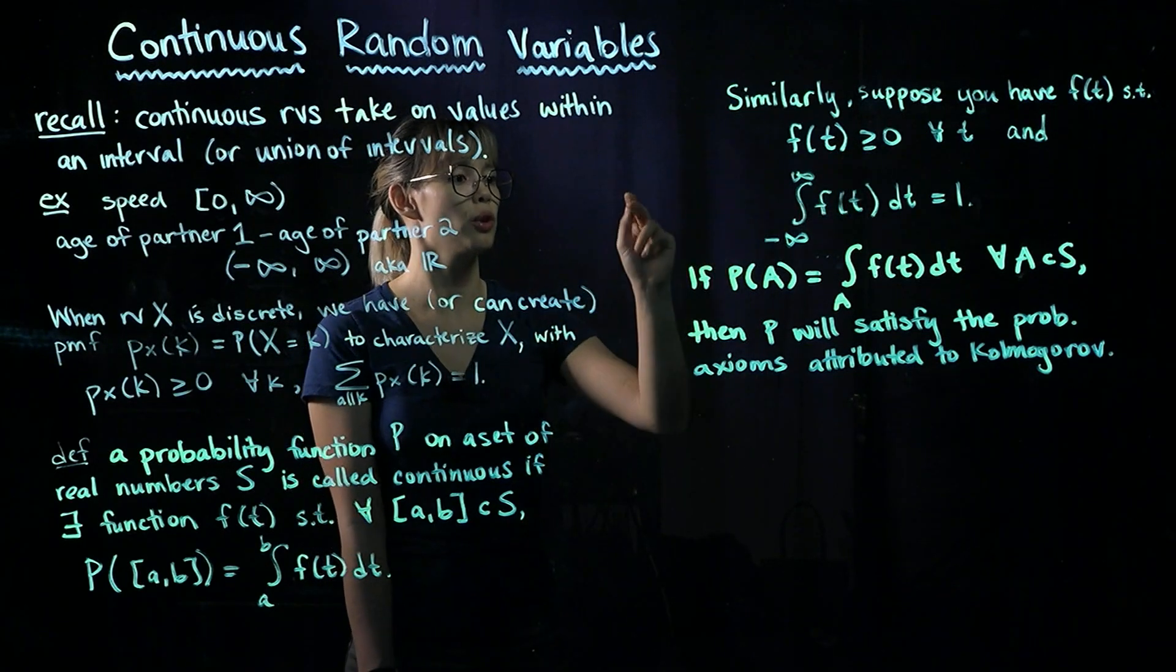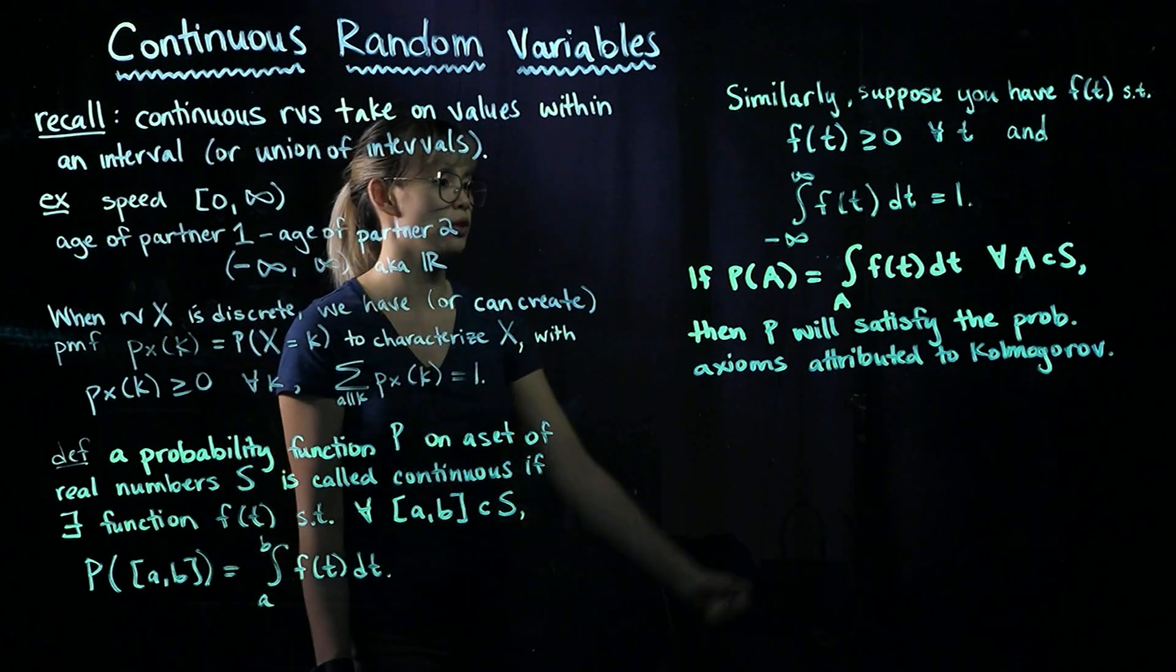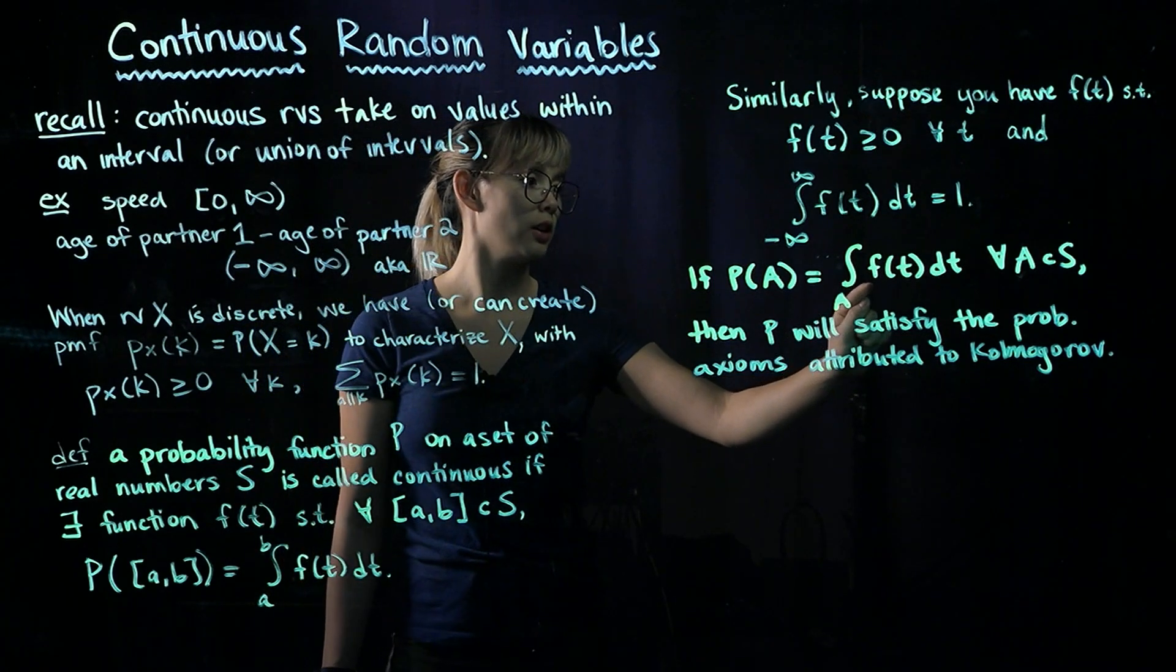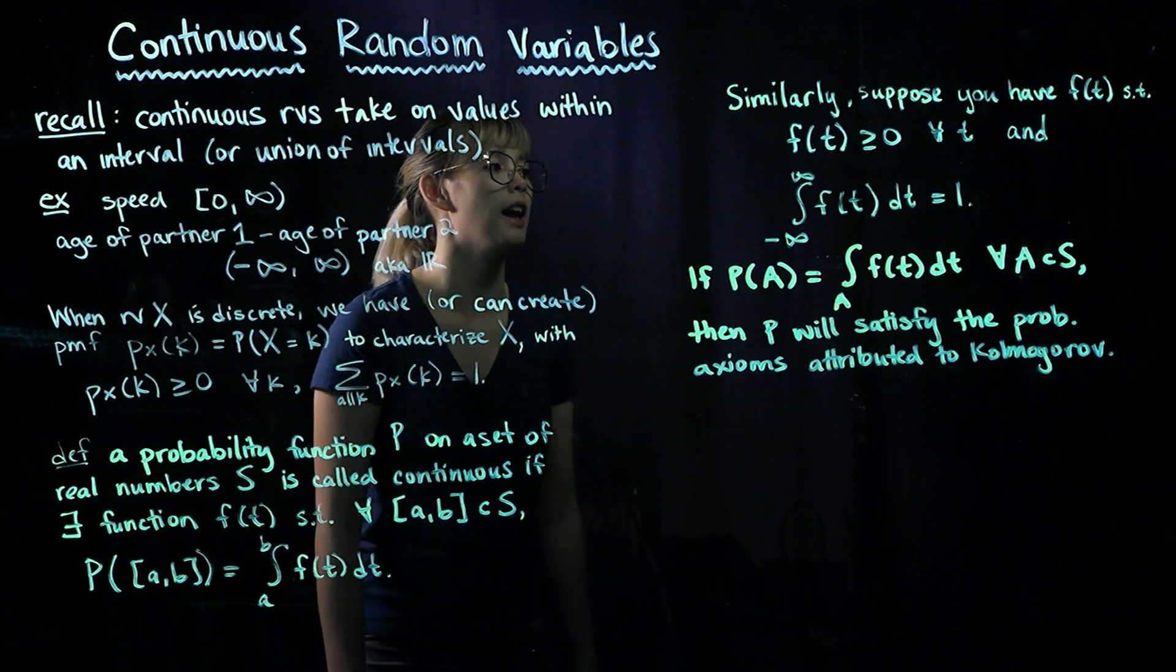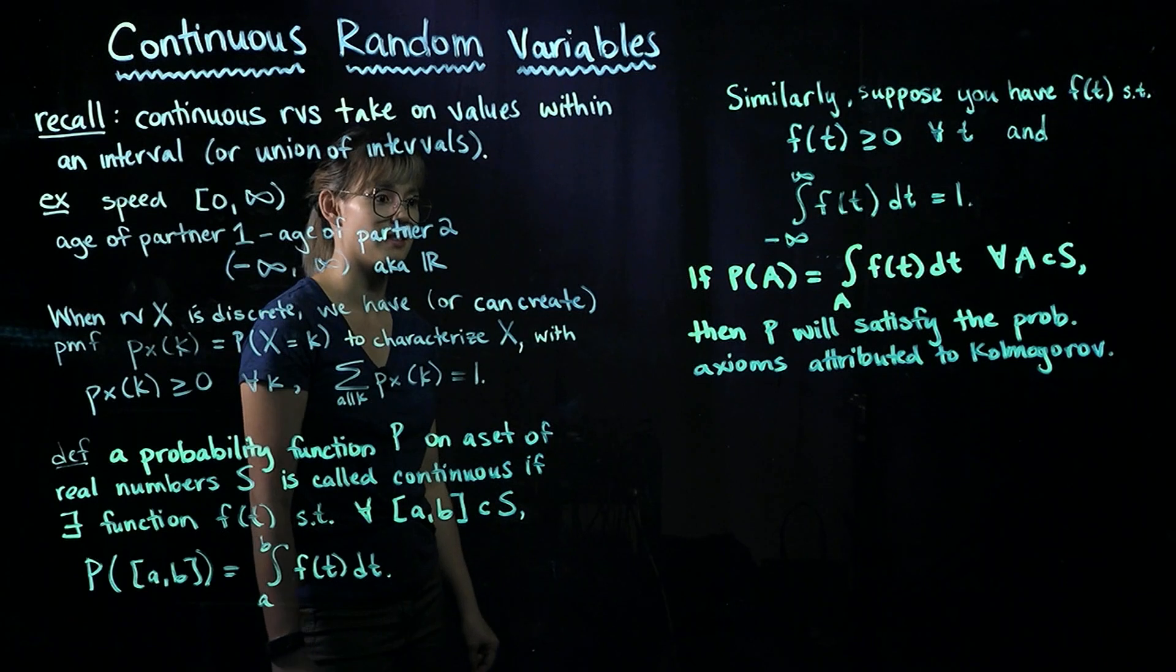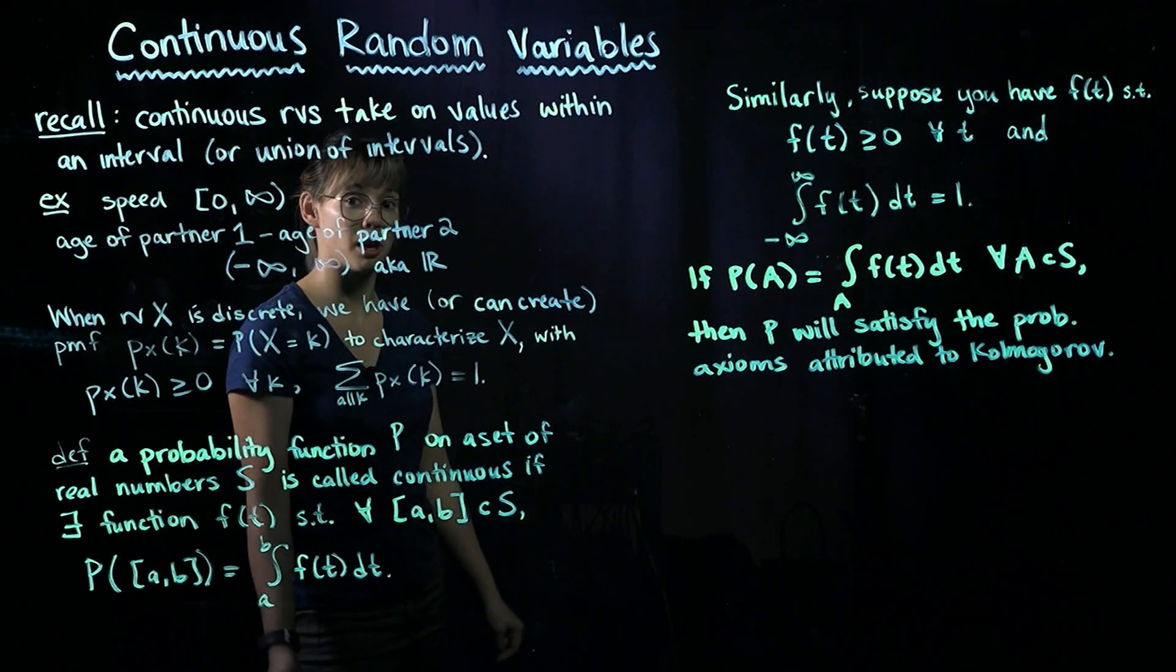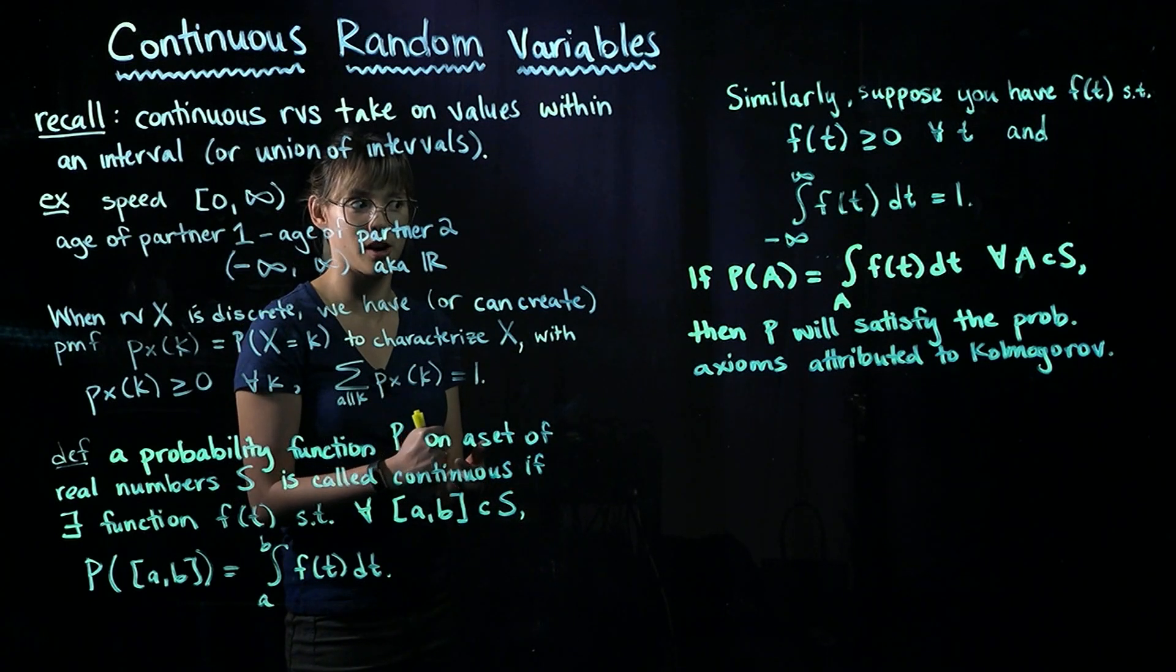If the probability of A is equal to the integral of F of T over A for all A contained in our sample space, then P will satisfy the probability axioms that we learned about a few weeks ago that are attributed to Kolmogorov.